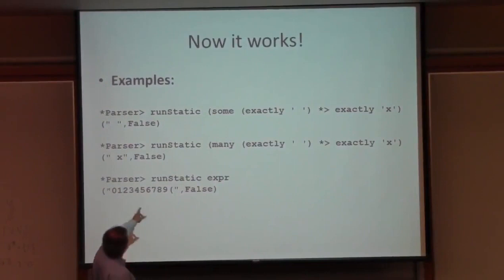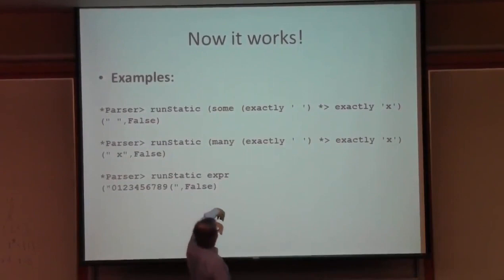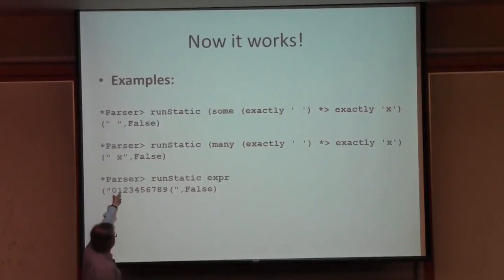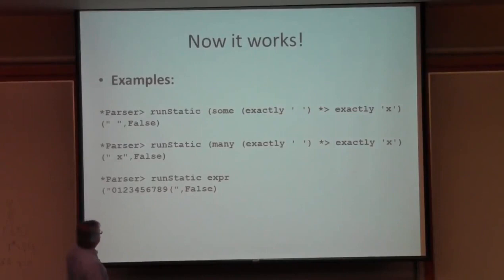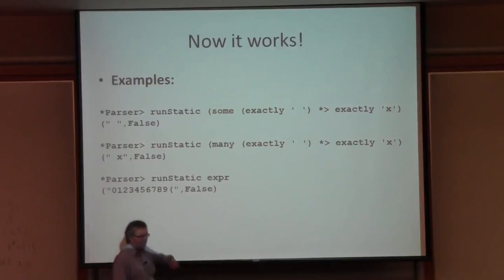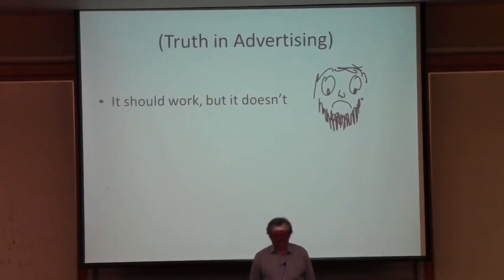Now it works. If I analyze a grammar that says parse one or more spaces and then x, it says that starts with a space and it doesn't match empty. If I say match zero or more spaces and then x, it says it might start with a space or an x and it can't match empty. And if I ask what characters can an expression start with, then it says zero, one, two, three, four, five, six, seven, eight, nine, or an open bracket.